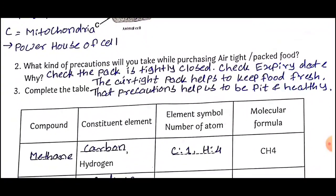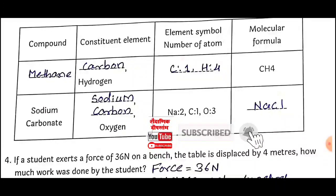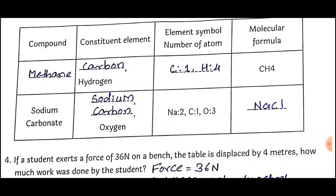Question Number 3: Complete the table. First compound is methane. Constituent elements are carbon and hydrogen. Element symbols and number of atoms: C is 1 and H is 4. Molecular formula is CH4. Second compound is sodium carbonate. Constituent elements are sodium, carbon, and oxygen. Element symbols and number of atoms: Na2, C1, and O3. Molecular formula is Na2CO3.